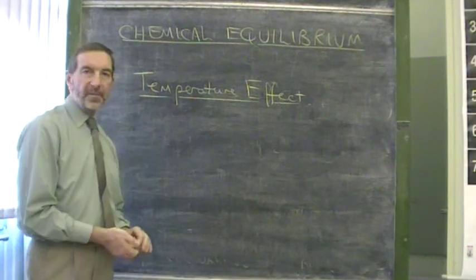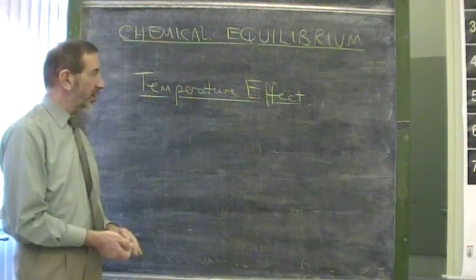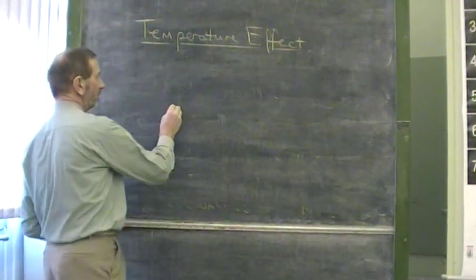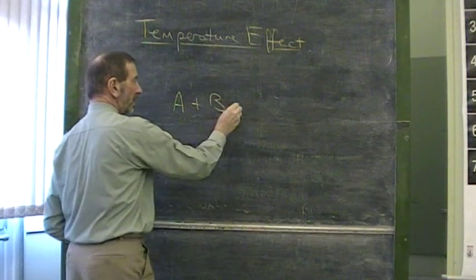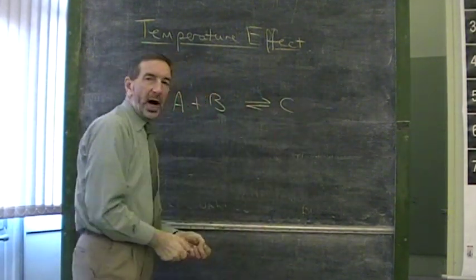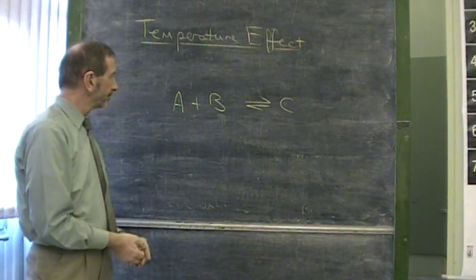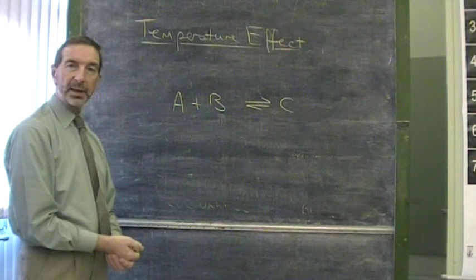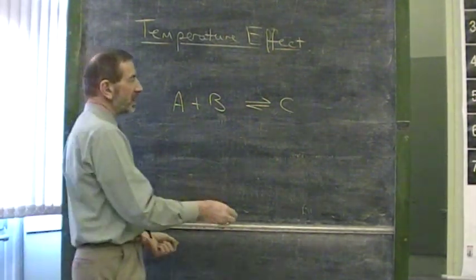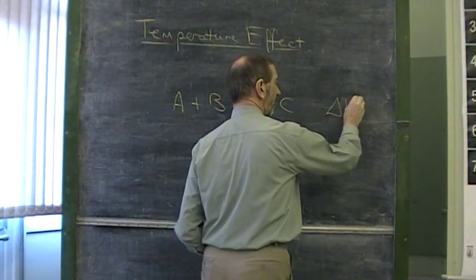Here we want to know what the effect of temperature would be on a reaction at equilibrium. In other words, if we have a reaction, for example A plus B in equilibrium with C, and we either raised or lowered the temperature, what would happen? As things stand, we can't tell. There's not enough information to tell what would happen if we altered the temperature. What's missing is the enthalpy value for the reaction.